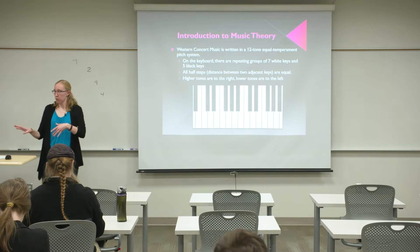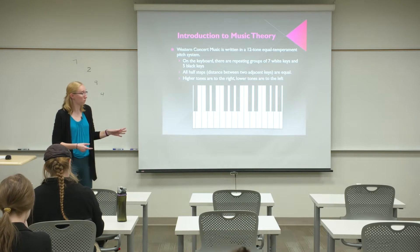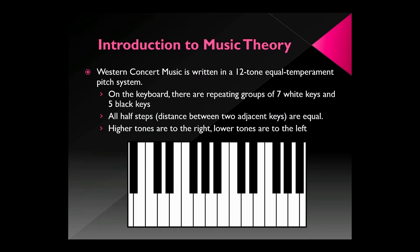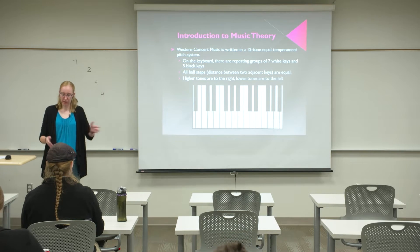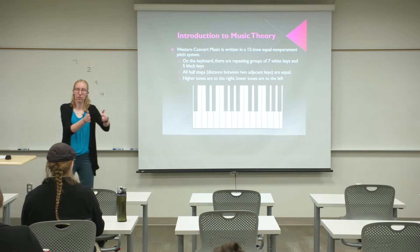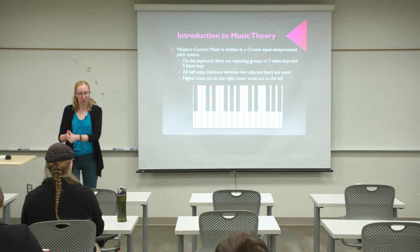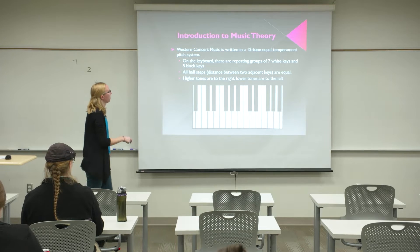Now we're done with math for about five minutes. On to music. Western concert music is written in a 12-tone, equal-temperament pitch system. There are 12 different notes. The equal-temperament part means they're evenly spaced — not a big jump then a little jump. I'm illustrating all the music on a keyboard since we've all seen one of those.